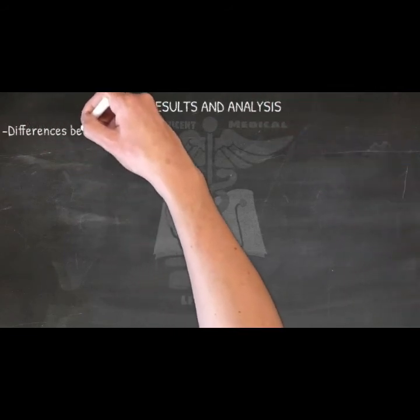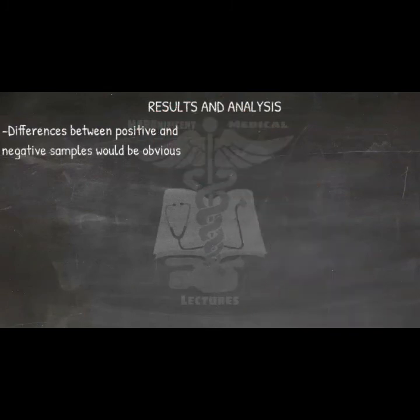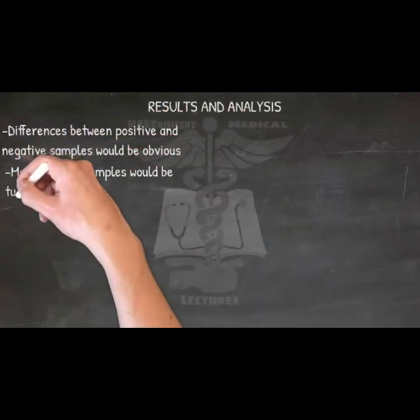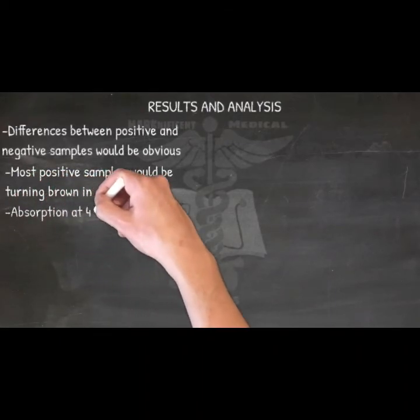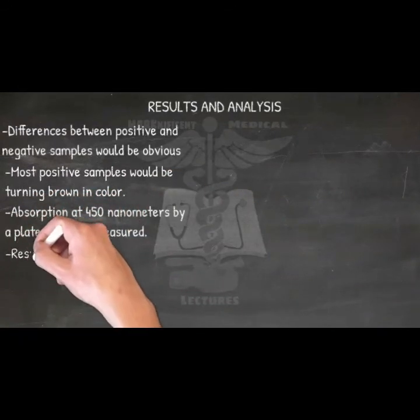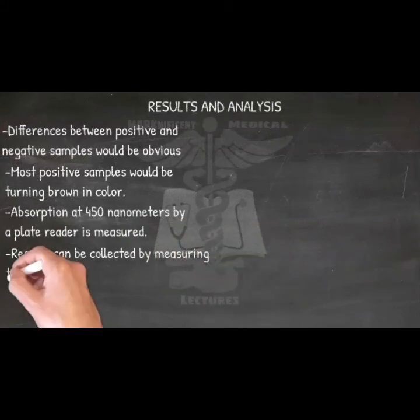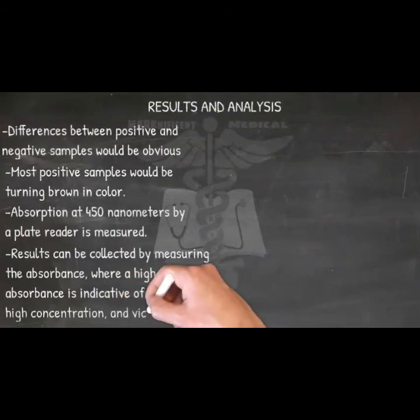Results and Analysis. When you examine your results, differences between positive and negative samples would be obvious. Most positive samples would be turning brown in color. If color is not fully developed in about 5 minutes, incubate again at the same temperature. The result is also obtained when the absorption at 450 nanometers is measured by a plate reader. Results can be collected by measuring the absorbance, where a high absorbance is indicative of a high concentration, and vice versa.